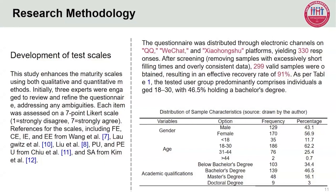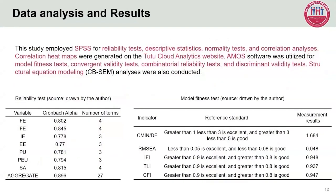The tested user group predominantly comprises individuals aged 18 to 30, with 46.5% holding a bachelor's degree. This study employed SPSS for reliability tests, descriptive statistics, normality tests, and correlation analysis. Correlation heat maps were generated on the Tutu Cloud Analytics website. Amos software was utilized for model fitness tests, convergent validity tests, combinatorial reliability tests, and discriminant validity tests. Structural equation models were also conducted.